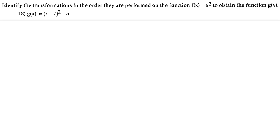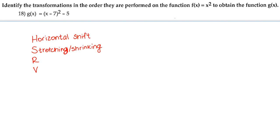The transformations that should be performed in order refer back to H, S, R, V — where H stands for horizontal shift, S stands for stretching or shrinking, R stands for reflection, and V stands for vertical shift.